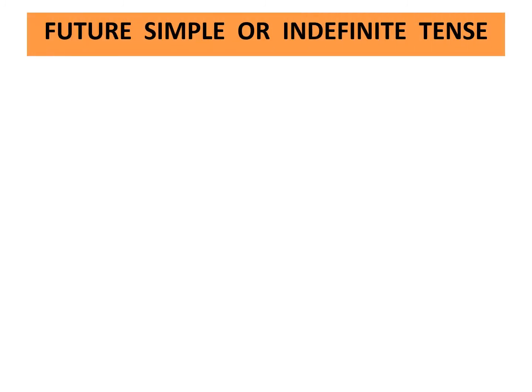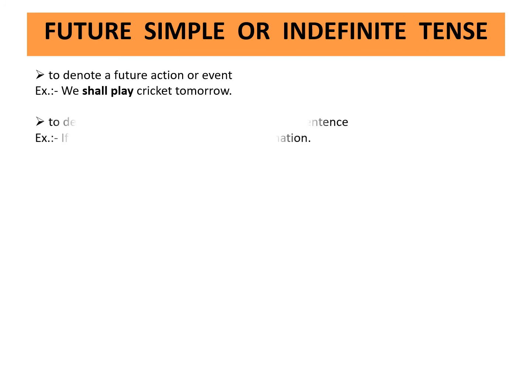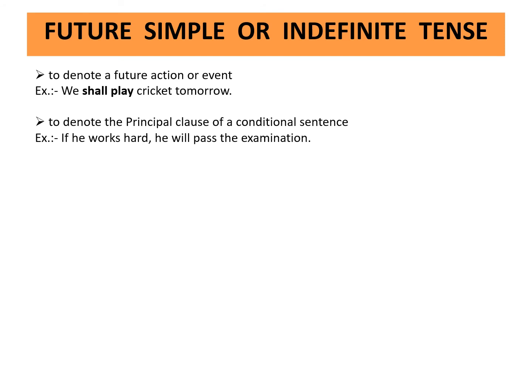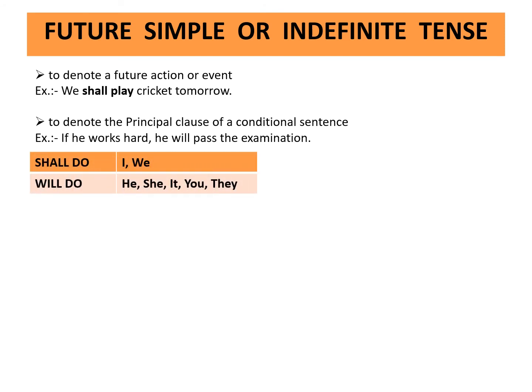Future simple or indefinite tense denotes a future action or event. Example: We shall play cricket tomorrow. It also denotes the principal clause of a conditional sentence. Example: If he works hard, he will pass the examination. Shall or do is used with I and we. Will or do is used with he, she, it, you, and they.